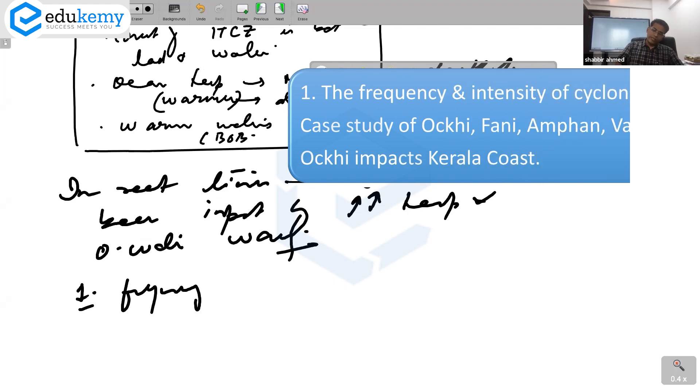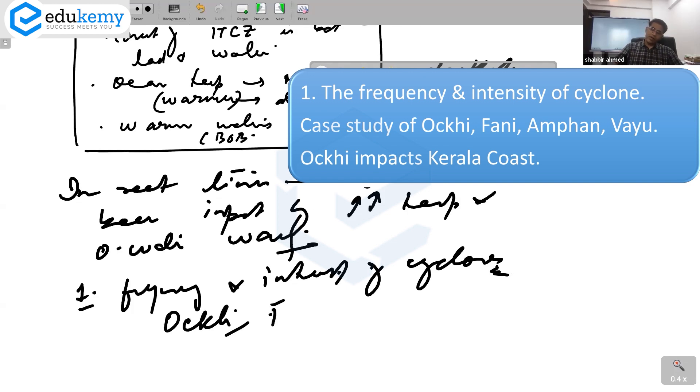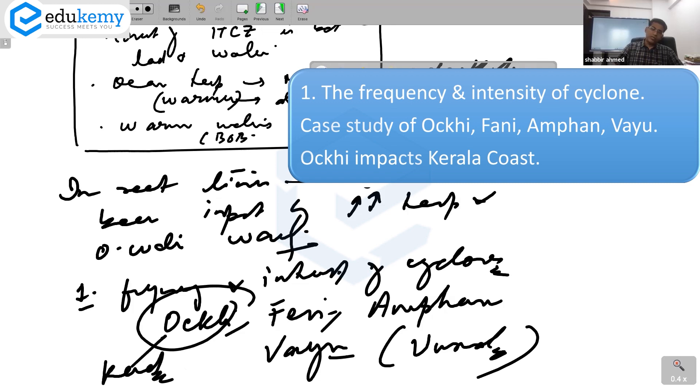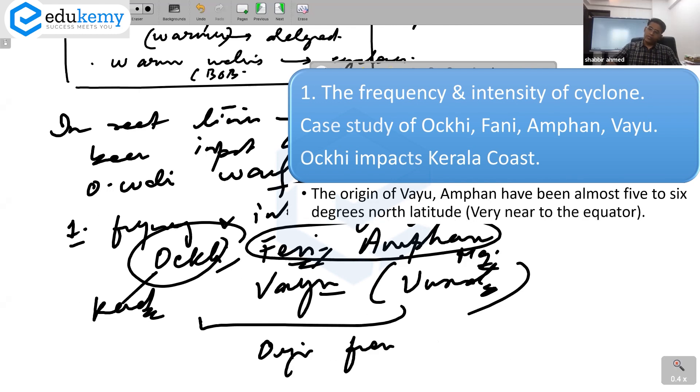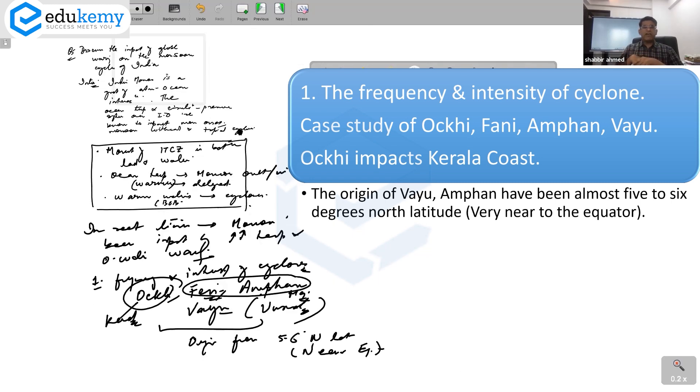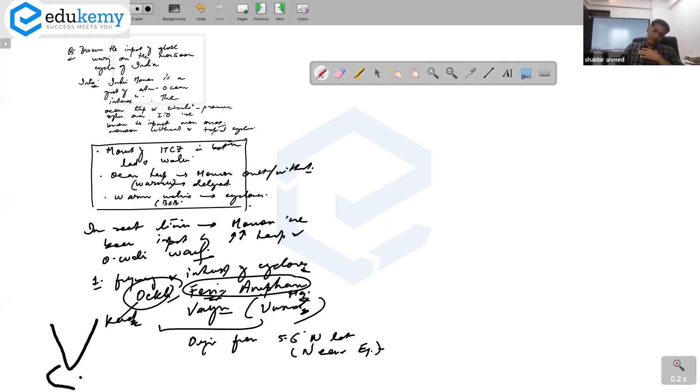Number one, we can talk about the frequency and intensity of cyclones. Give the case study of Oki, the case study of Feni, any one or two of them. Talk about Amfen and Wai. All of these were unusual ones. Oki impacting Keral coast. Origin has been from almost 5 to 6 degrees north latitude, from very near the equator. Unusually, we have cyclones like Oki in the Keral coast. It starts and curves towards Keral coming from parts of Sri Lanka. Feni also comes and hits Odisha.